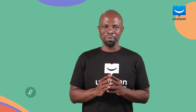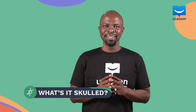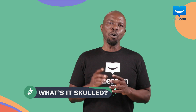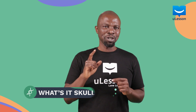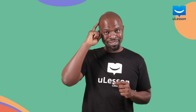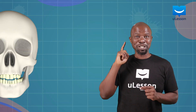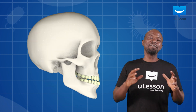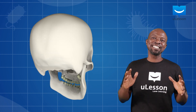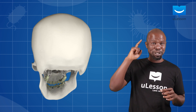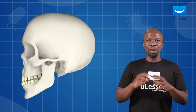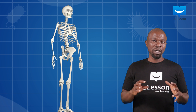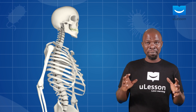So let's start at the top. Now what's that bony structure that forms your head called? It's called the skull. We're going to begin our study of the mammalian axial skeleton from the top, the skull, and we'll do that using a human skeleton. I'm sure you recall that humans are mammals too.